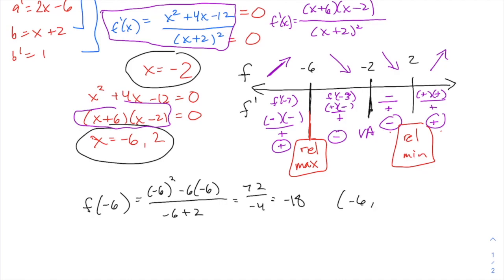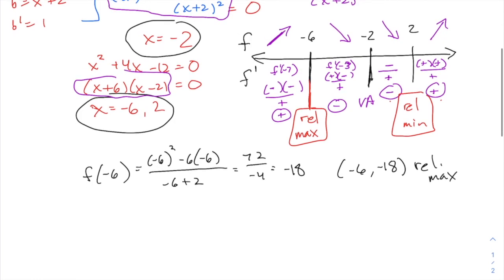we have a relative max. Now we have a relative min at x equals two. Let's get the y coordinate. So two squared minus six times two over two plus two. It's going to give us four minus twelve over four. So that's negative eight over four. That's negative two. So two, negative two. There's a relative minimum.